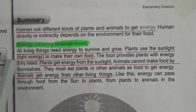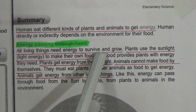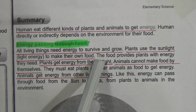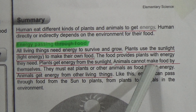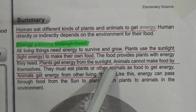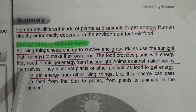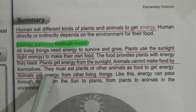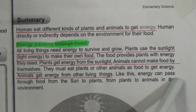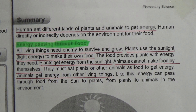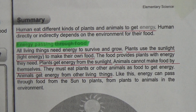Next topic: Energy Passing Through Food. All living things need energy to survive and grow. Plants use sunlight energy to make their own food. The food provides plants with the energy they need. Animals cannot make food by themselves; they must eat plants or other animals as food to get energy. Like this, energy can pass through food from the sun to plants, and from plants to animals in the environment.